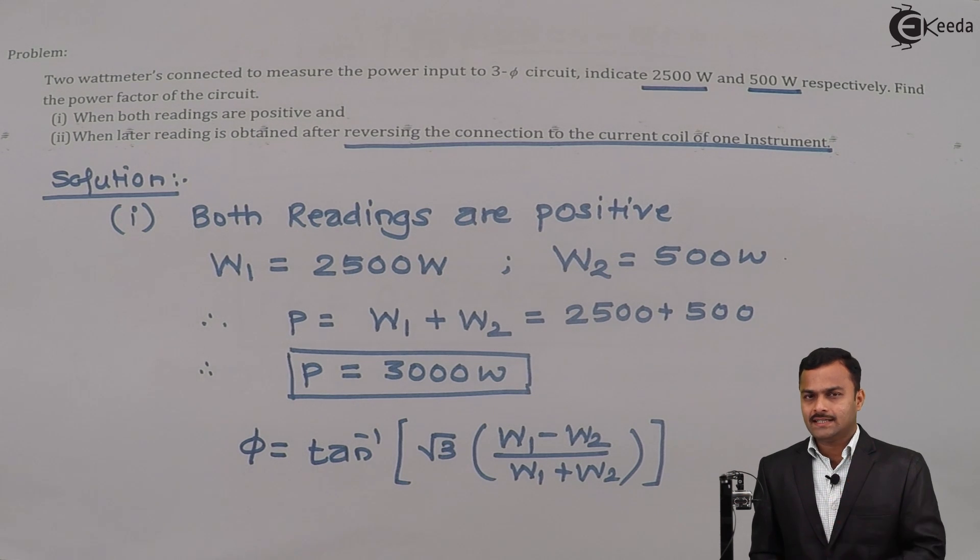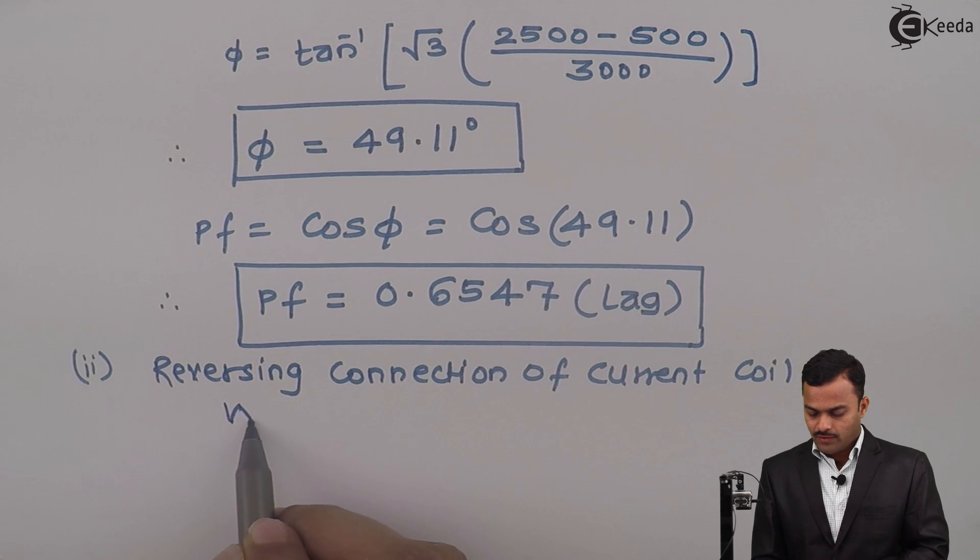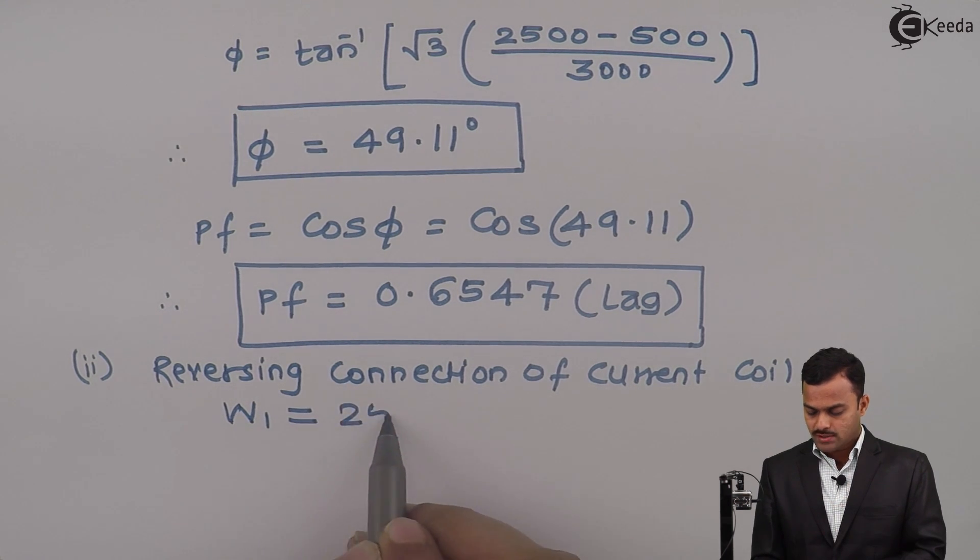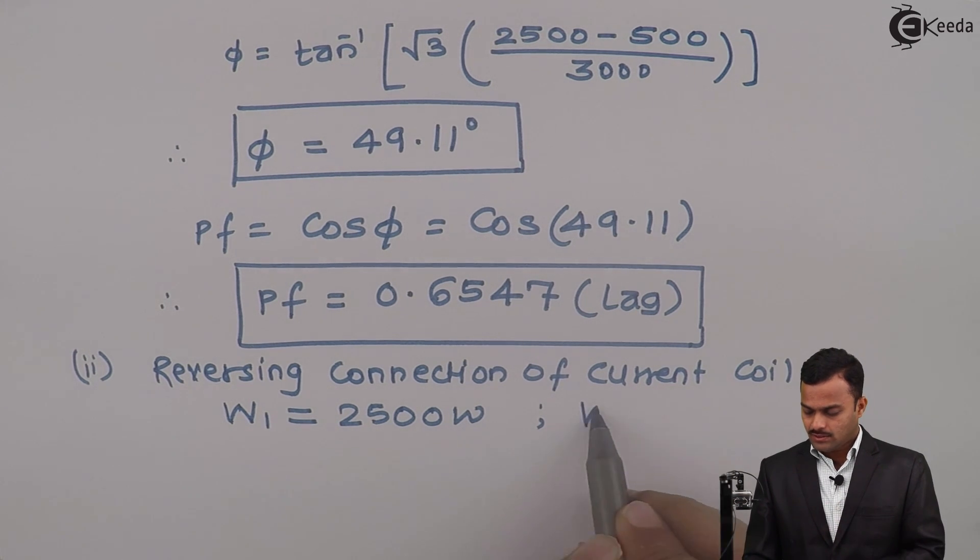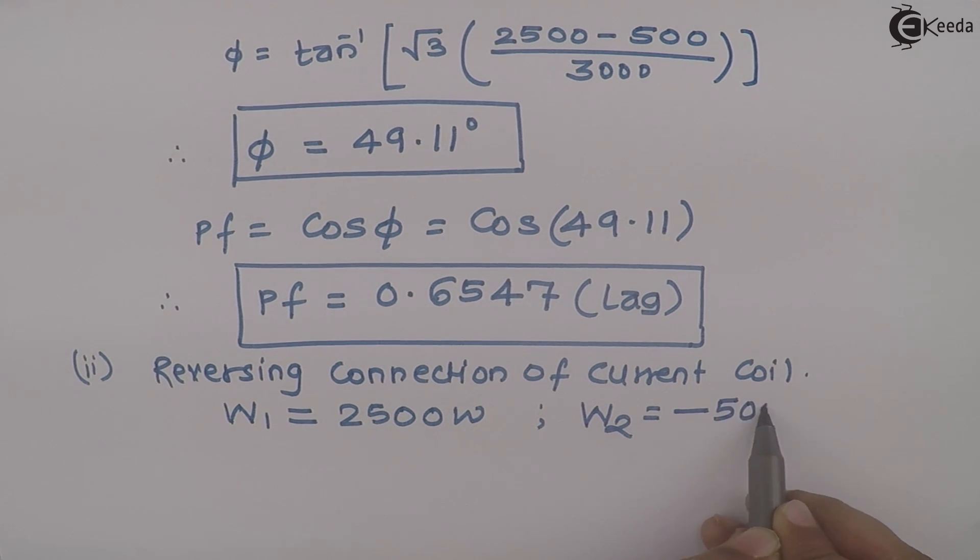What does that mean? It means I will consider that the first wattmeter will give me a proper reading without reversing any connection, so W1 is positive 2500 watts. And I will consider the second wattmeter is giving me a reading only after reversing the connection of the current coil, so how to indicate that? With a negative sign. So W2 will be minus 500 watts.